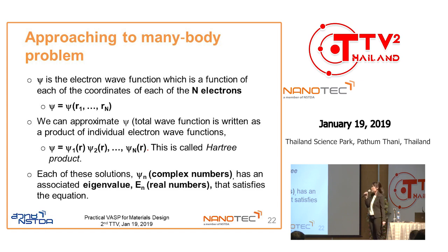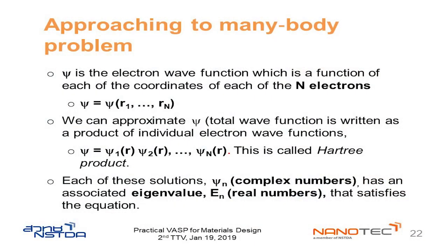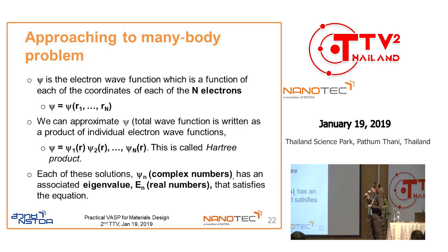The next approximation is to approximate the total wave function. Instead of the electron wave function being a function of all coordinates of all n electrons, we make an approximation where the total wave function can be written as a product of individual electron wave functions — this is called the Hartree product. Each of these solutions will have a complex number associated with the eigenvalue, which is the energy, that satisfies the equation.